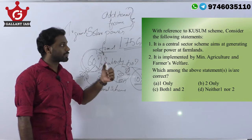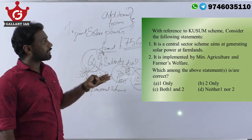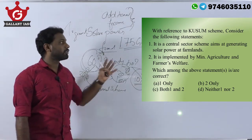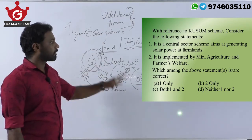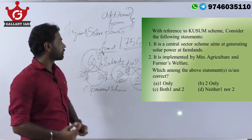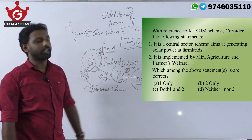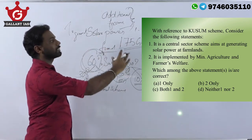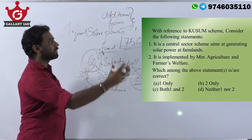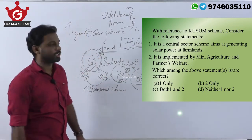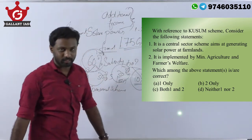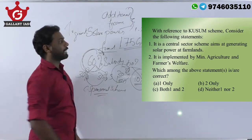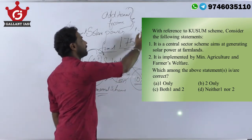Model question — with reference to the Kusum scheme, consider the following statements. One: it is a central sector scheme that aims at generating solar power on farmlands. Two: it is implemented by the Ministry of Agriculture and Farmers Welfare. Statement one says it is a central sector scheme. The second part is correct — it does aim at generating solar power on farmlands — but the first part is wrong. It is a centrally sponsored scheme, not a central sector scheme, because funding is shared between center and state. So statement one is wrong.